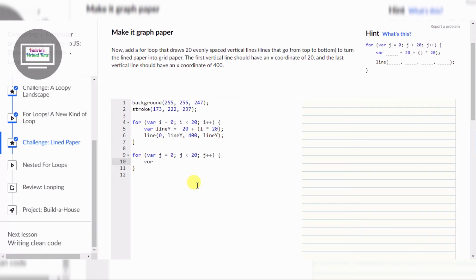var line x equals 20 plus j times 20, space it out, and then line, now